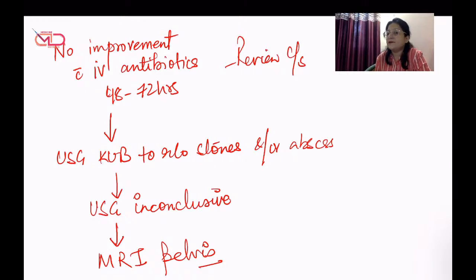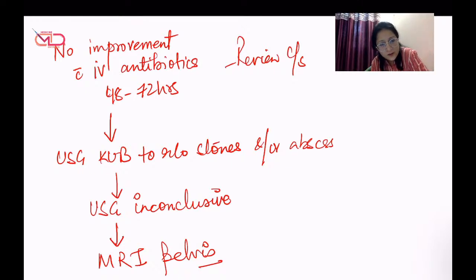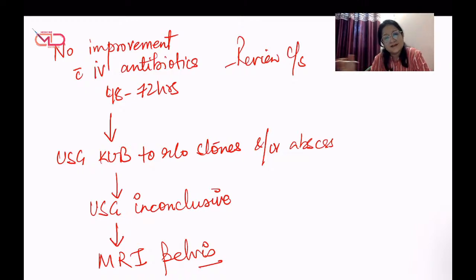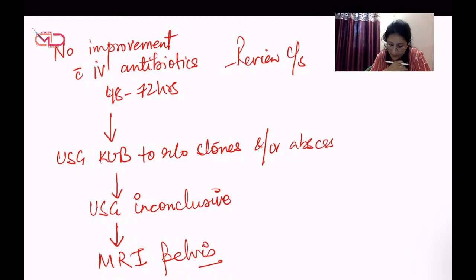Any symptomatic urinary tract infection in pregnancy should definitely be treated. After the patient has recovered from acute pyelonephritis, a urine routine culture test of cure can be repeated after three months. If the infection remains persistent, she can be put on prophylactic nitrofurantoin for the remainder of the pregnancy so that no recurrences happen.